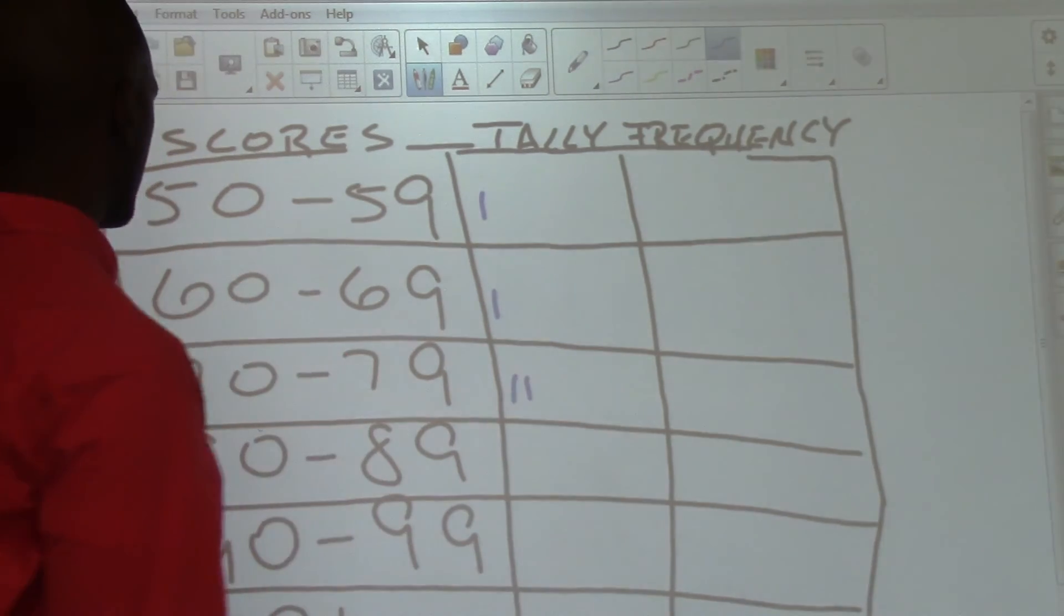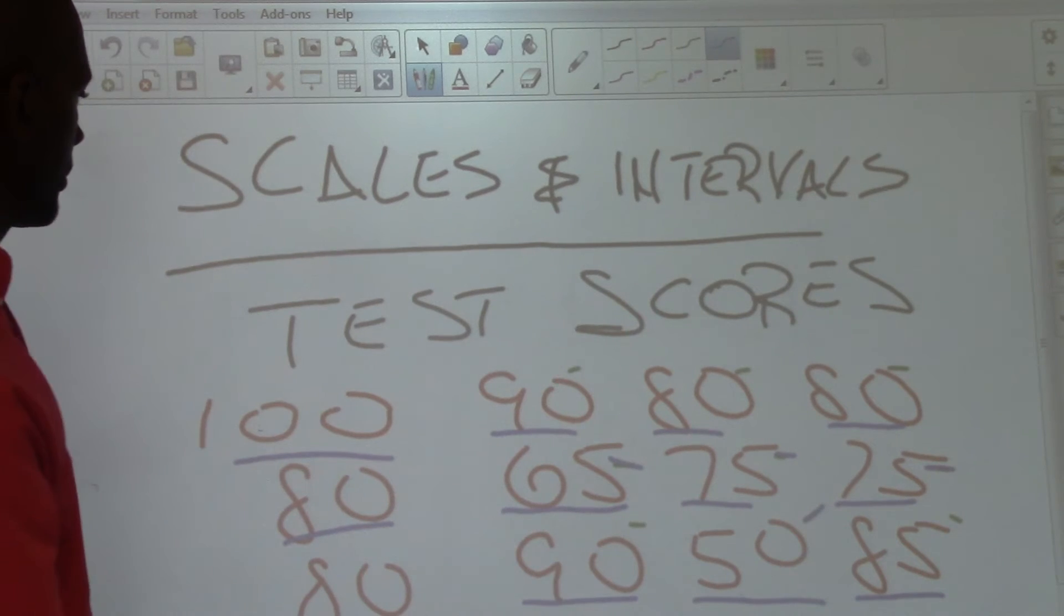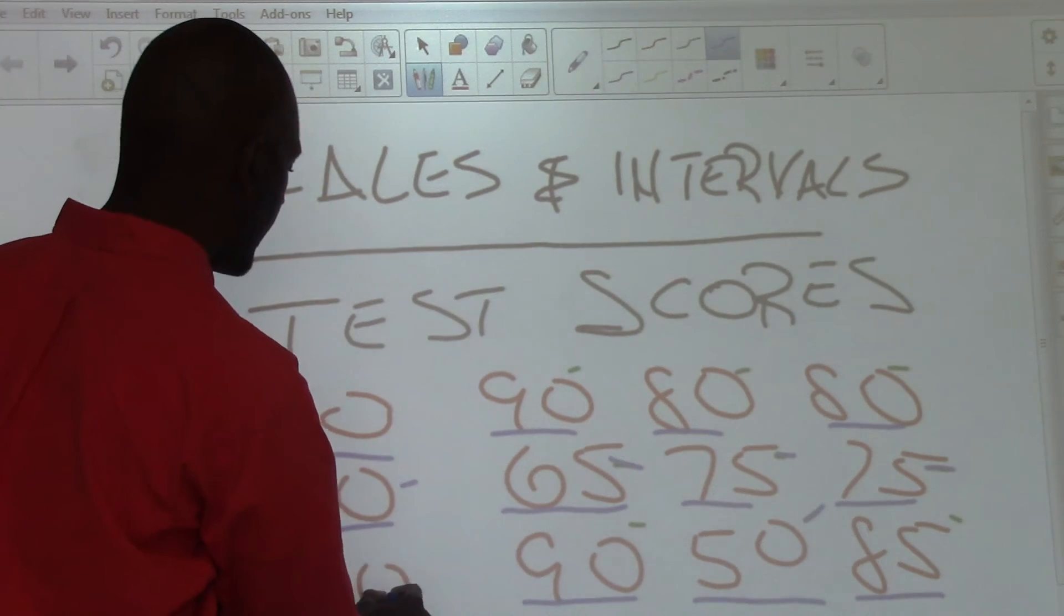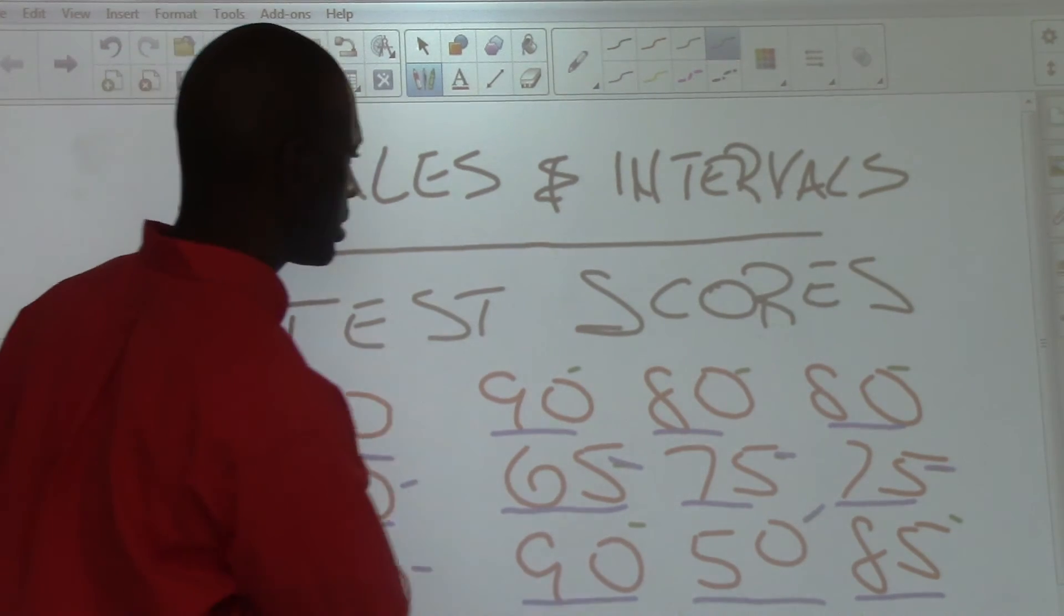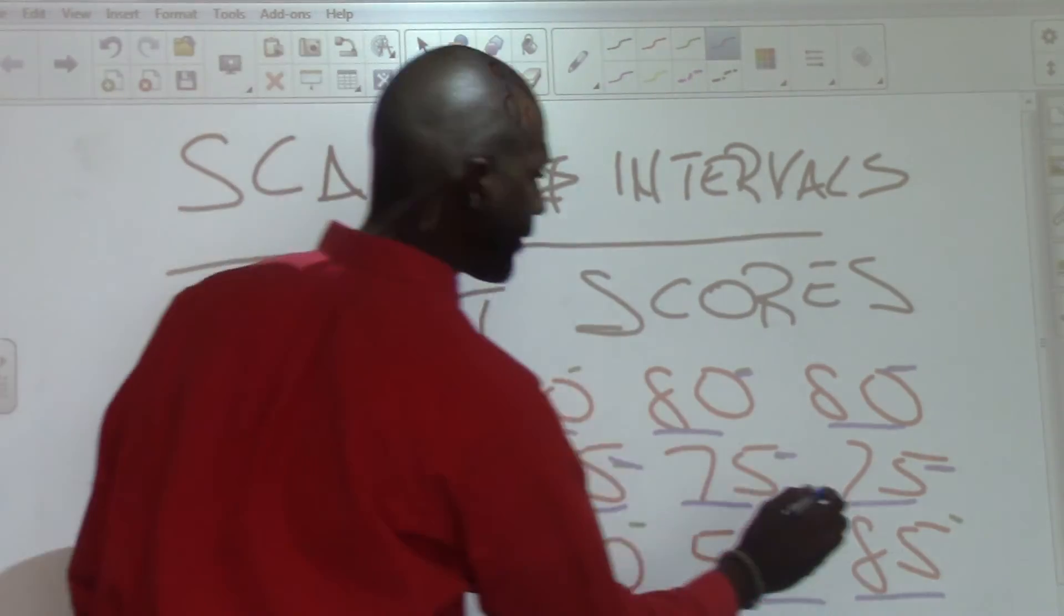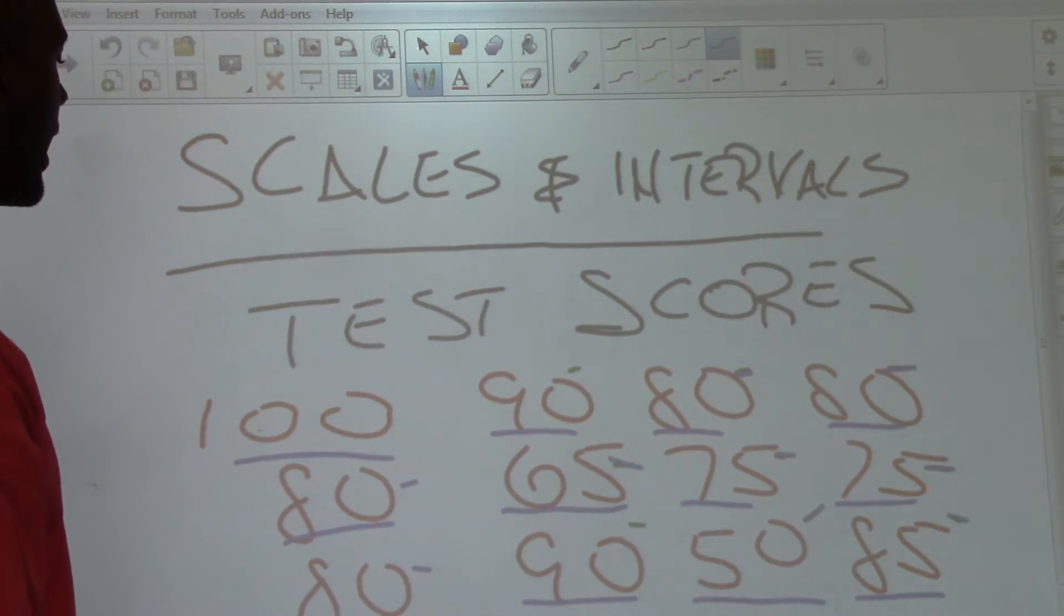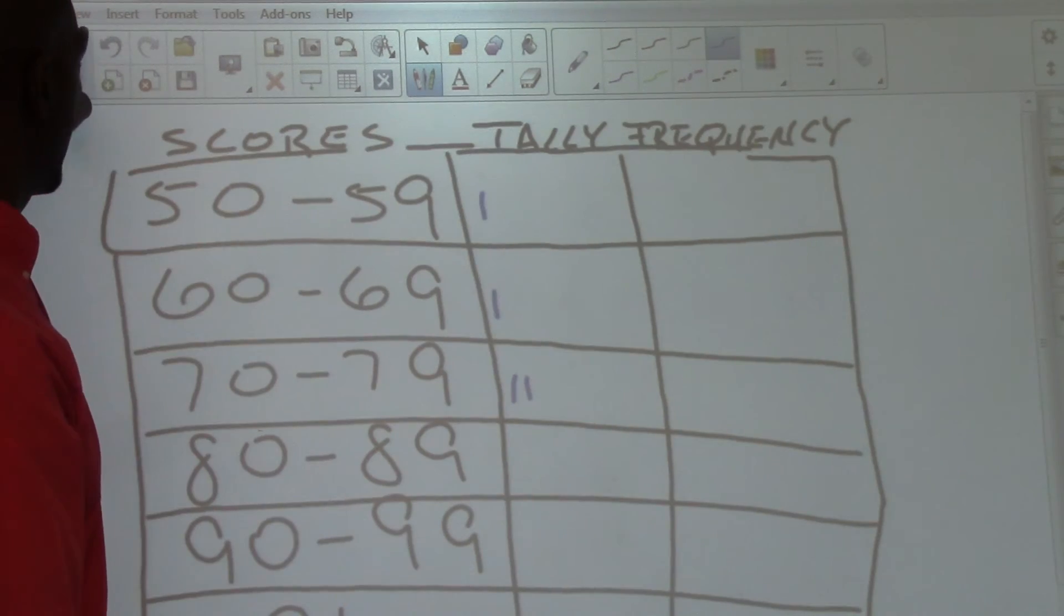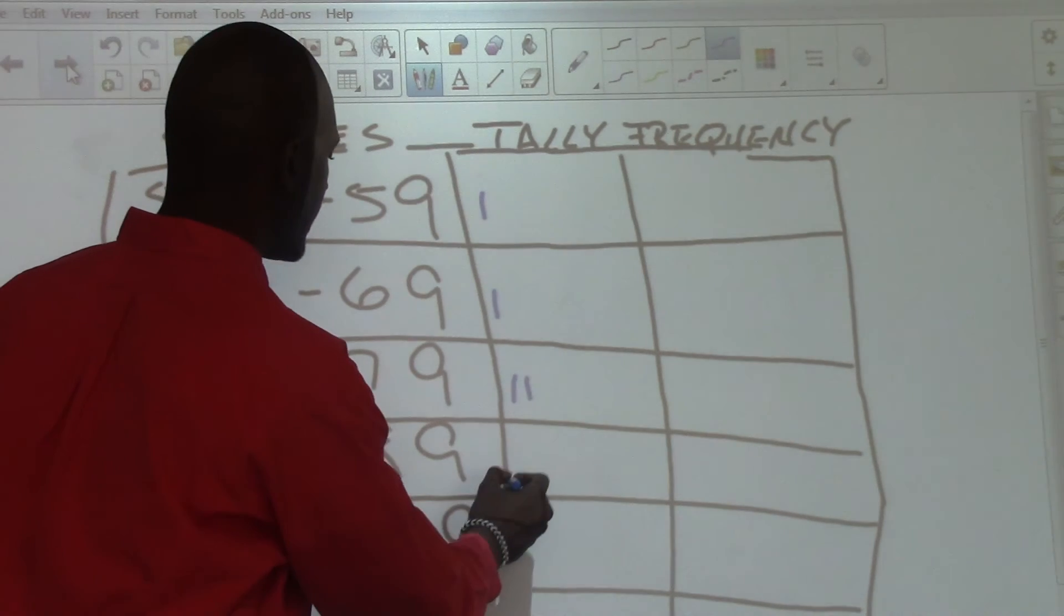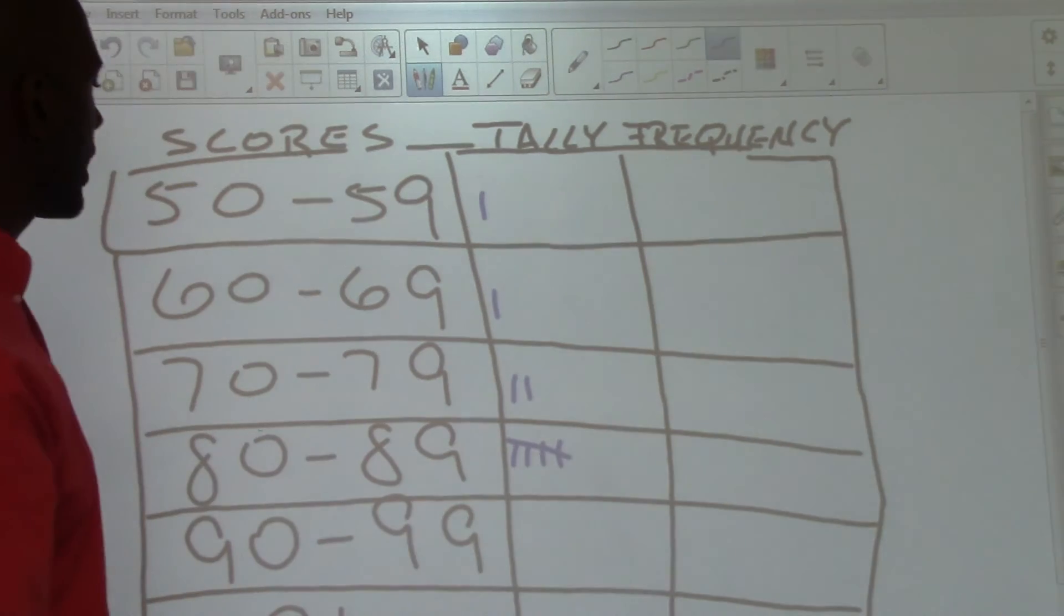From 80 to 89, we have 1, 80, 2, 80, 3, 80, 4, 80, and the 85 falls in between 80 to 89, so it's 5 scores that were made between 80 and 89. 1, 2, 3, 4, and the 5 tally mark.